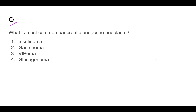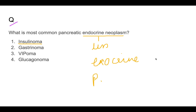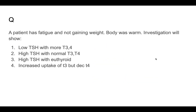Question four: what is the most common pancreatic endocrine neoplasm? The answer is insulinoma. In the pancreas, most tumors are exocrine neoplasms such as pancreatic adenocarcinoma, but when the question specifically asks about endocrine neoplasms, the answer is insulinoma.